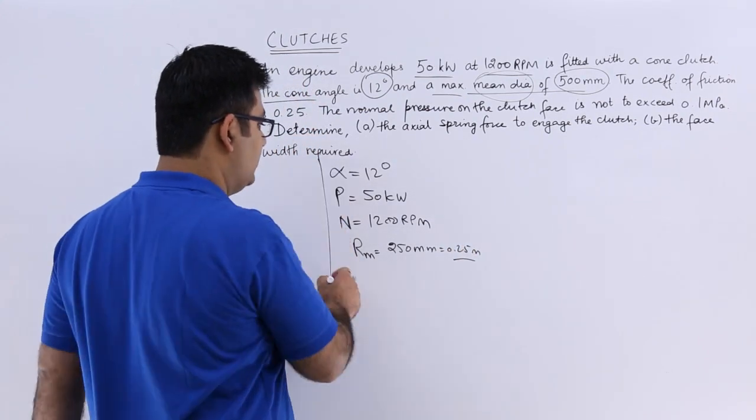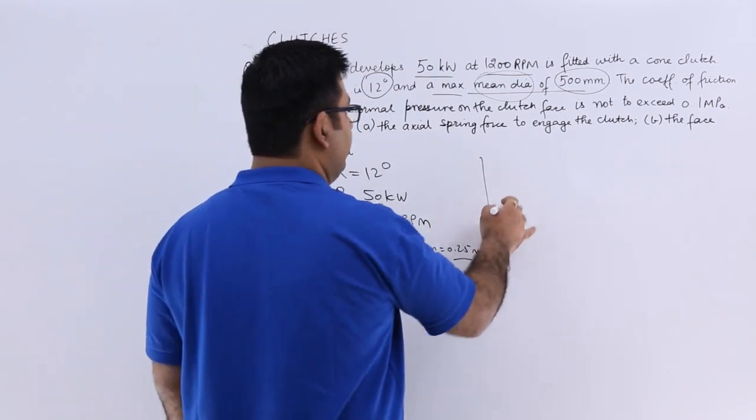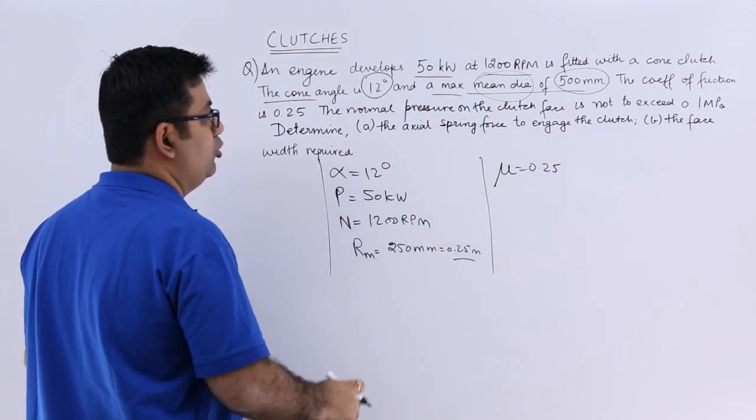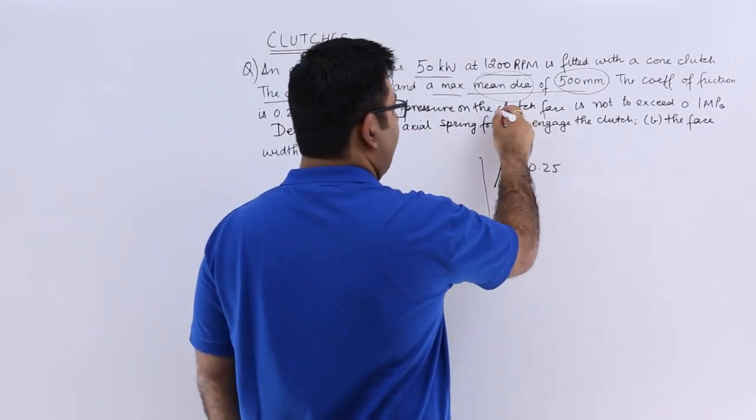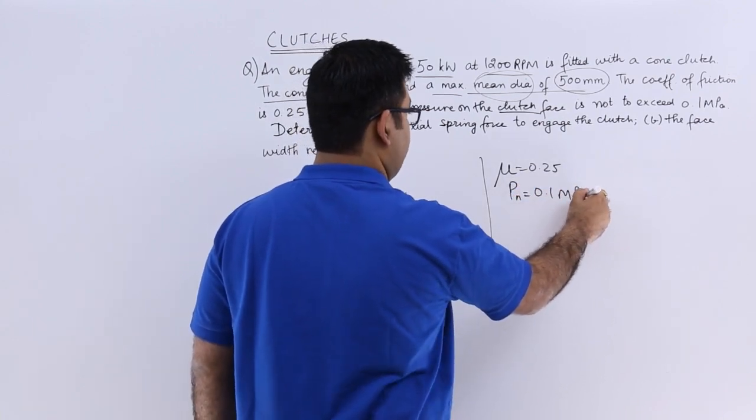So we have this data given to us. The coefficient of friction is 0.25. The normal pressure on the clutch face, that is PN, is 0.1 MPa.